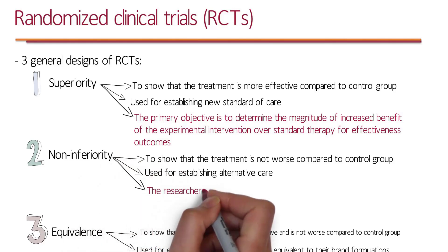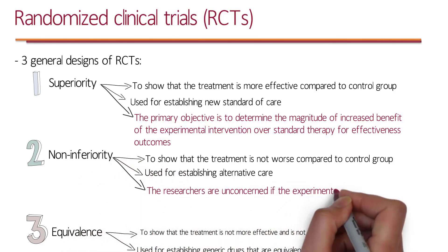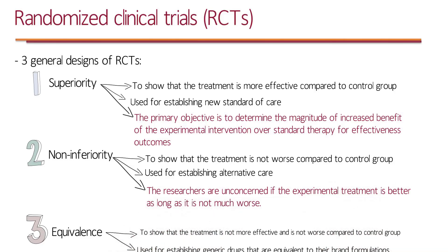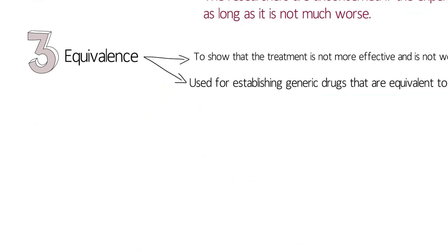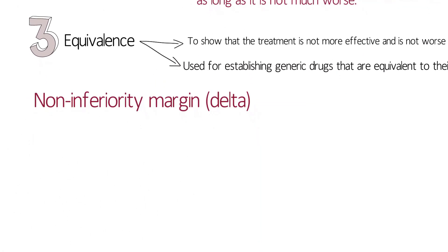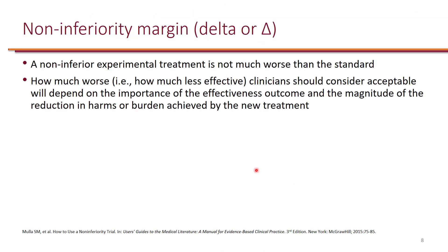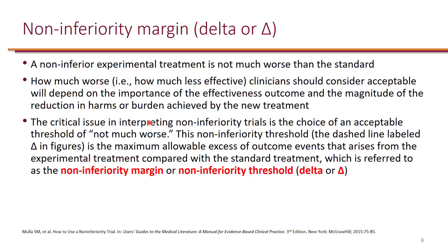In non-inferiority studies, the researchers are unconcerned if the experimental treatment is better, as long as it is not much worse. Now let's take a look at the non-inferiority margin, which is known as delta. How much worse or how much less effective really depends on the importance of the effectiveness outcome and the magnitude of the reduction in harm or burden achieved by the new treatment. This threshold is known as the non-inferiority threshold or non-inferiority margin, denoted as delta.